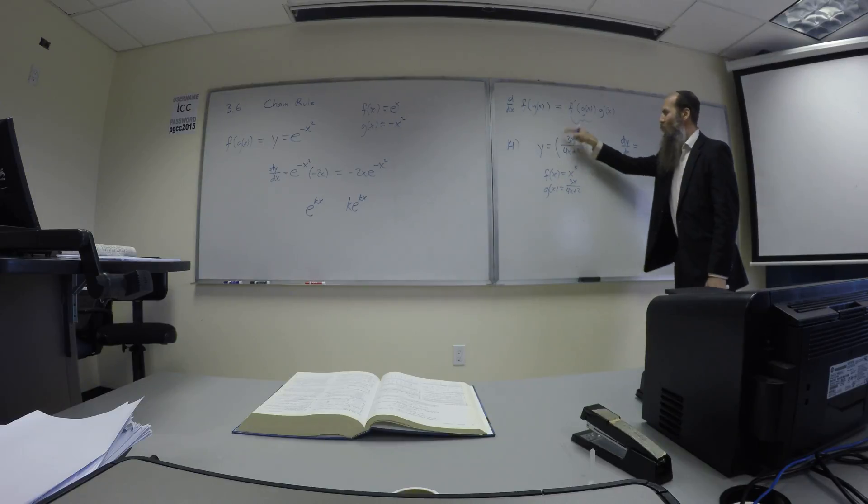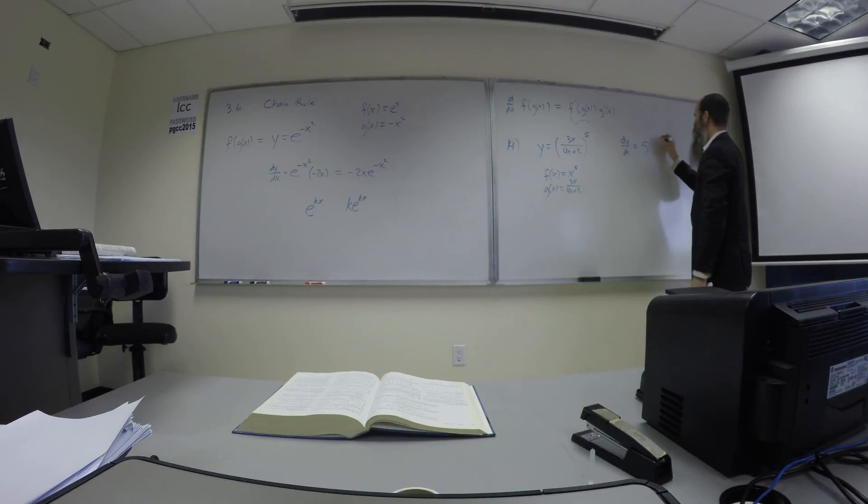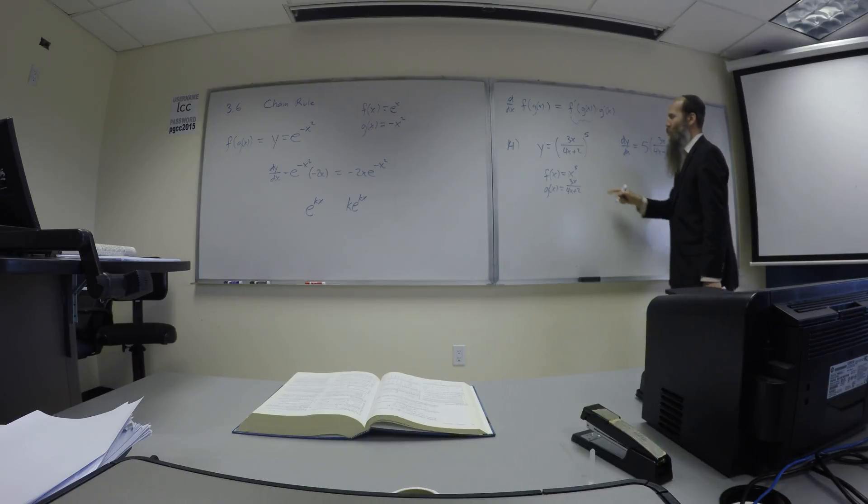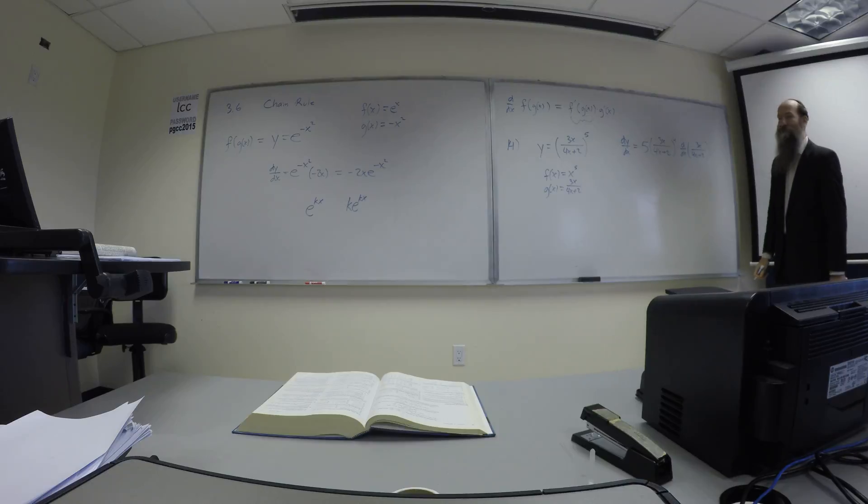dy dx is going to be five, you differentiate around the inner function, right? Just take the five down, lower it to a four like you always would, keep the junk inside the same, 3x over 4x plus two to the fourth, now multiply it by the derivative of the inner function. I'm going to write that in notation, so I need d dx of inner. Make sense?